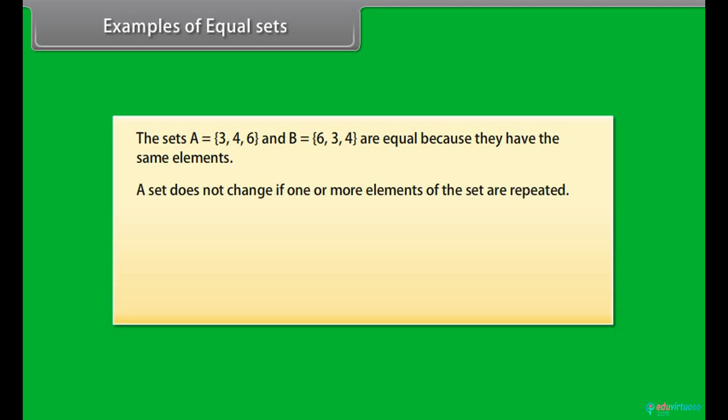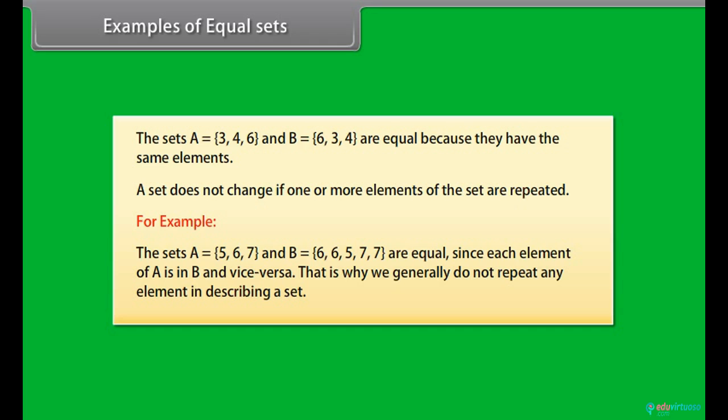A set does not change if one or more elements of the set are repeated. For example, the sets A is equal to 5, 6, 7 and B is equal to 6, 6, 5, 7, 7 are equal since each element of A is in B and vice versa. That is why we generally do not repeat any element in describing a set.